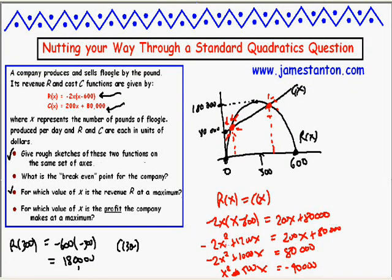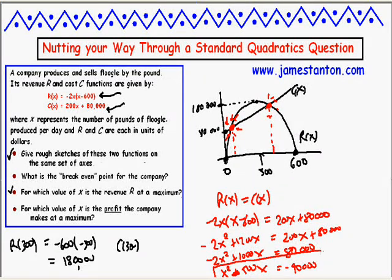Wait — I made an arithmetic error: it should be negative 2x squared, so dividing by negative 2 gives negative 40,000 on the right, meaning x² - 500x = -40,000. Now I can see this is the equation we need to solve.